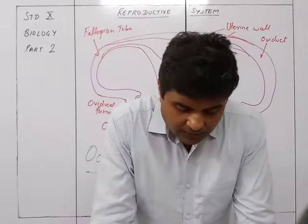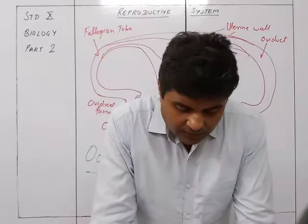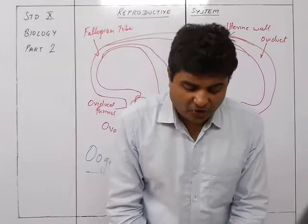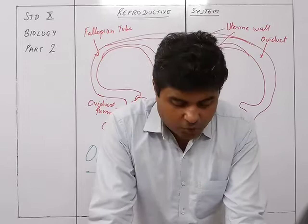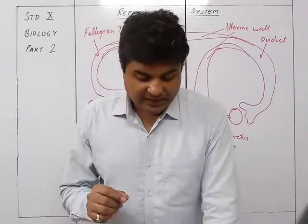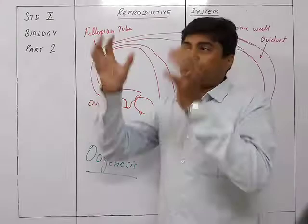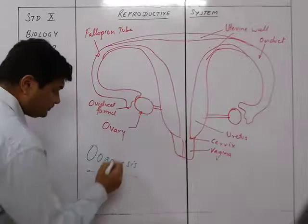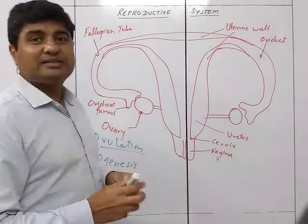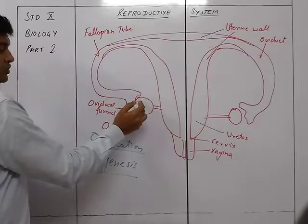As the egg grows larger, the follicle enlarges, fills with fluid, and becomes the Graafian follicle. When ripe, the follicle bulges over the surface of the ovary. Oogenesis is the process in which ova-producing cells give rise to a mature ovum. Ovulation is the rupture of the follicle releasing the egg — the process by which the egg from the ovary enters into the oviduct.